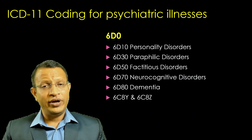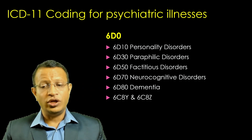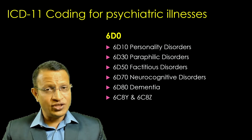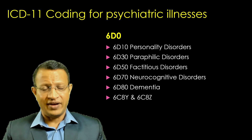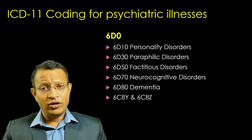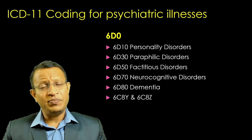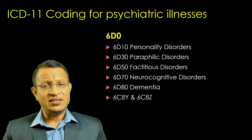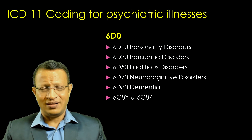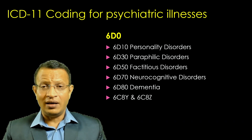Moving into 6D, as I mentioned: personality disorder, paraphilic disorder, factitious disorder, neurocognitive disorder, and dementia come into 6D. In personality disorder, there has been a major change similar to DSM-5 — as research clearly indicates, pure forms of personality disorder are very rarely seen. It will now be considered as personality disorder — mild, moderate, or severe — and depending upon the predominant clusters it will be classified. The earlier A, B, C subtype classification has been completely removed.